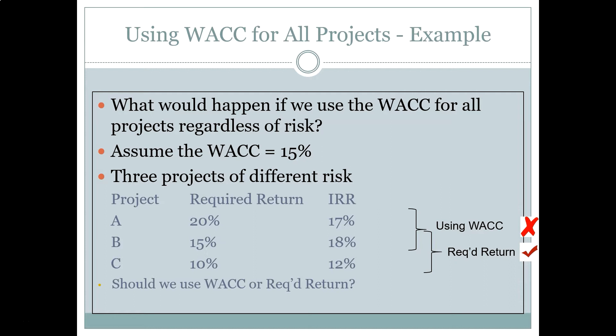C has a profitable project. Its risk is really low, so its required return is low — 10% — but its internal rate of return provides value above that. Likewise for B, it has a required rate of return of 15% directly, and its IRR provides some return above that. We reject A because even though the project's IRR is pretty good at 17%, it's not high enough to justify the risk of taking this project.